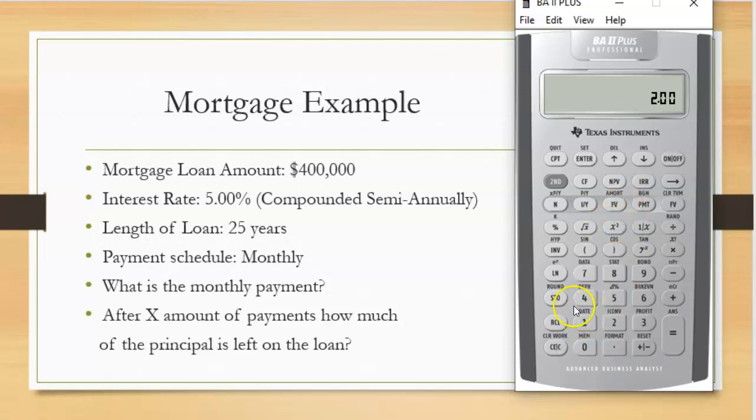The next input that we have to put in is going to be the present value. And this present value is going to equal this $400,000 loan amount. So we put $400,000 within there, this is a positive number we're getting. Somebody's giving us $400,000 to buy some sort of residential home.